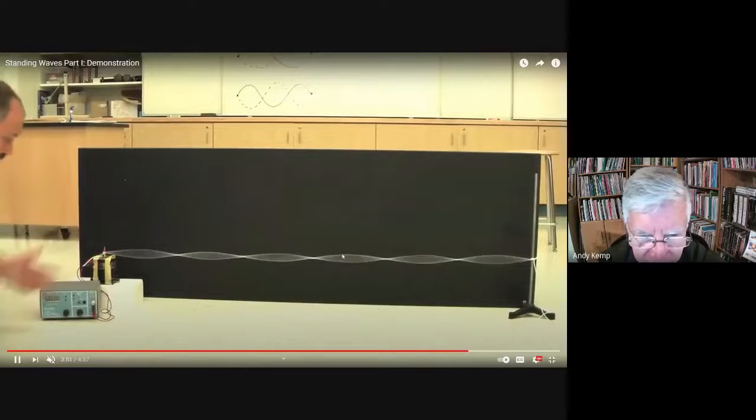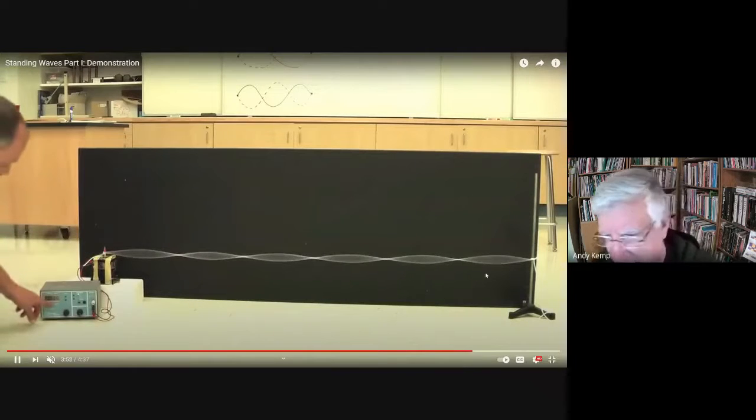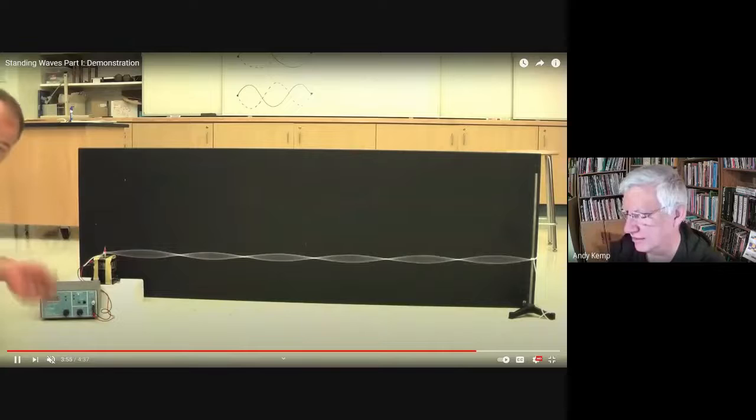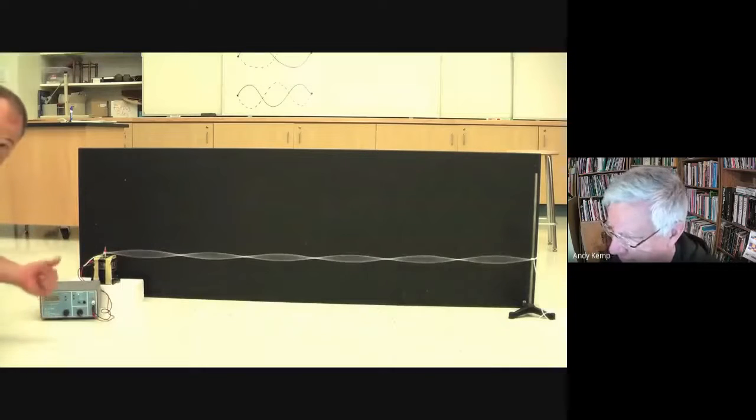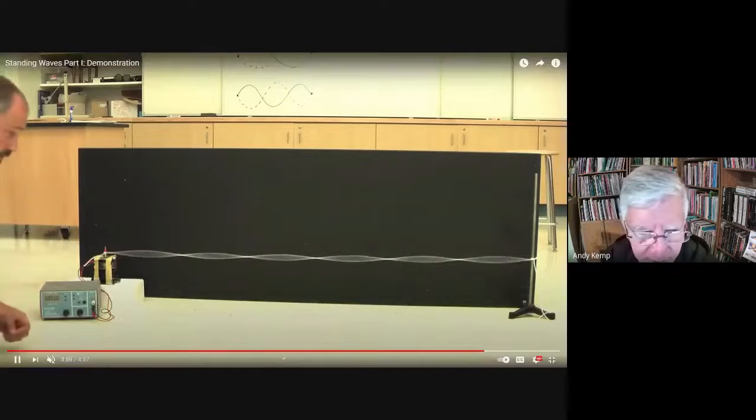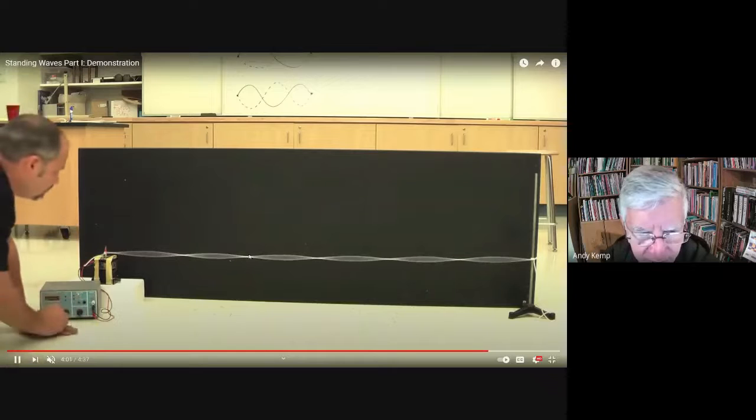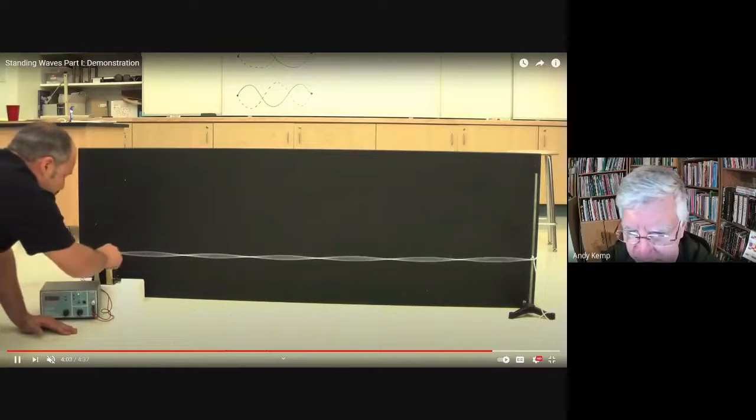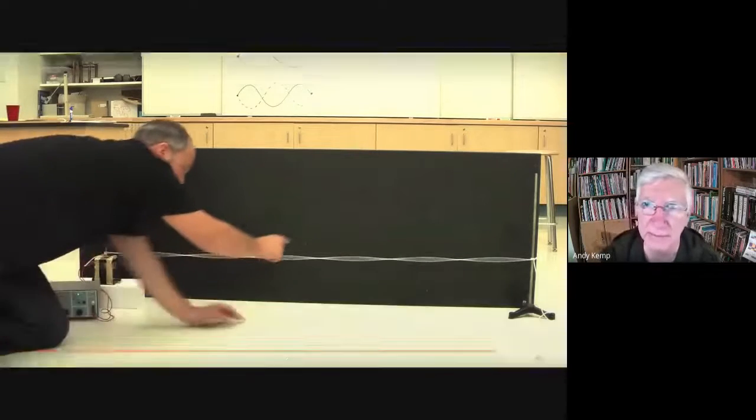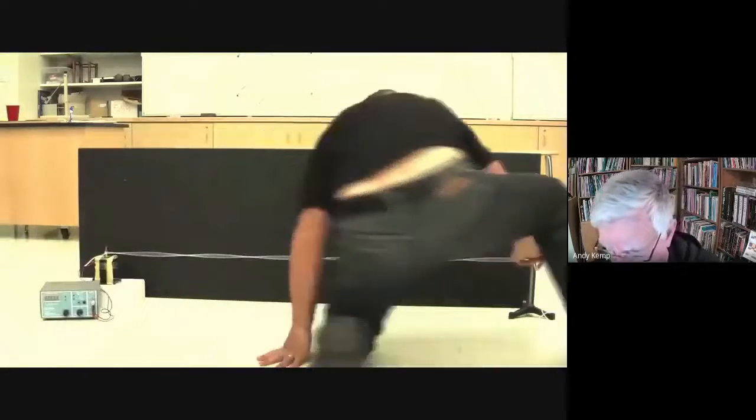You have 1, 2, 3, 4, 5, 6 times the fundamental. So you've got 6 half wavelengths or 3 full wavelengths. You trace the top, it goes up and down, up and down, up and down. So that just shows you you can do it in a rope, but it demonstrates some of the features.